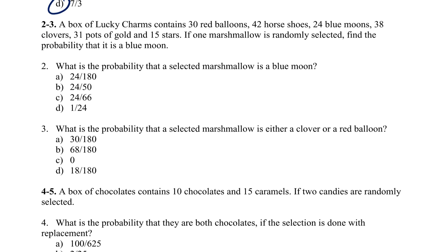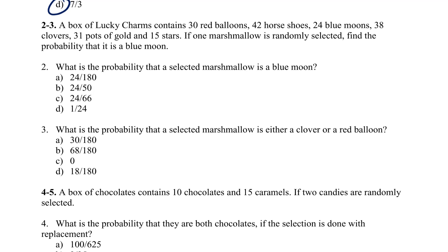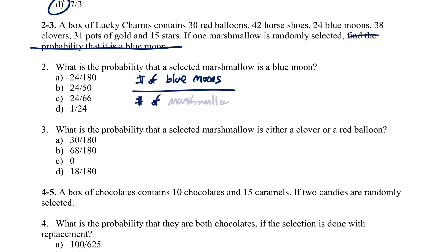For questions 2 through 3, we have a box of Lucky Charms containing 30 red balloons, 42 horseshoes, 24 blue moons, 38 clovers, 31 popsicles, and 15 stars, and we're going to select a marshmallow randomly. We want to find the probability the selected marshmallow is a blue moon. We count the number of blue moons divided by the total number of marshmallows: 24 blue moons out of 180 total.